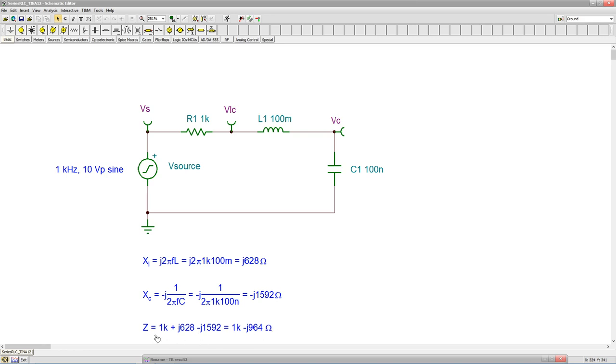And the Z for the whole thing is just the combination, 1k plus the j628 minus j1592. Reals to reals, imaginaries to imaginaries, so these partially cancel, and our completed impedance is 1k minus j964Ω.